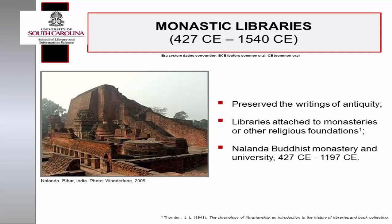Monastic libraries have been credited with preserving the written record of antiquity. They were usually attached to monasteries or other religious foundations, and primarily functioned to transcribe religious text and produce religious manuscripts. Nalanda, a Buddhist ministry and university in India founded by the Gupta Empire, was renowned for its extensive collections. Scholars from China, Greece, and Persia attended the Learning Center. The library contained religious manuscripts, as well as text on astronomy, astrology, grammar, literature, medicine, and philosophy.